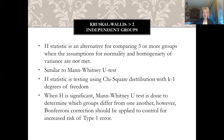The Kruskal-Wallis is for greater than two independent groups. The H statistic is the alternative for comparing three or more groups when normality and homogeneity of variance assumptions can't be met. The H statistic is tested using the chi-square distribution with K minus one degrees of freedom. When H is significant, the Mann-Whitney U test is done to determine which groups differ, and the Bonferroni correction must be applied to control for increased risk of Type I error.